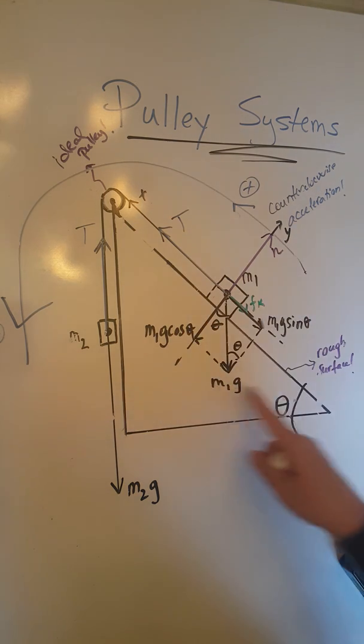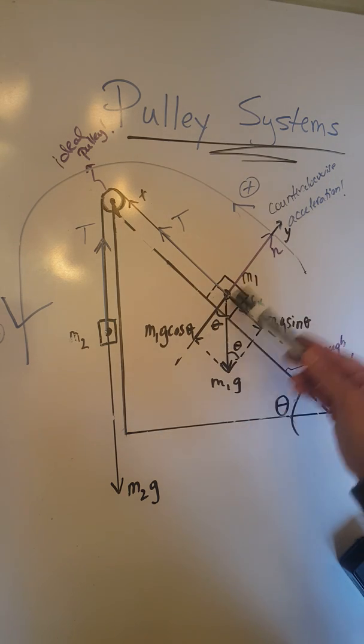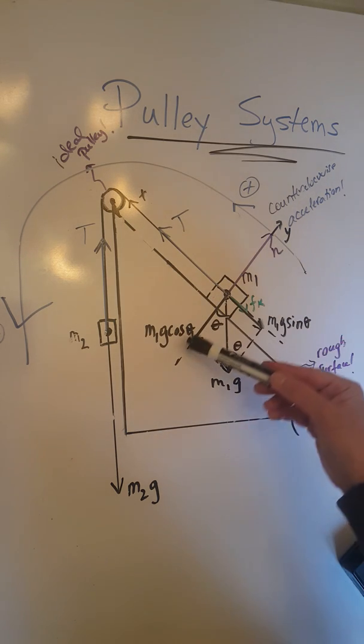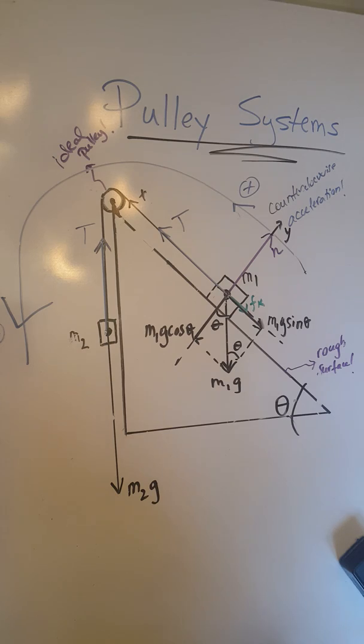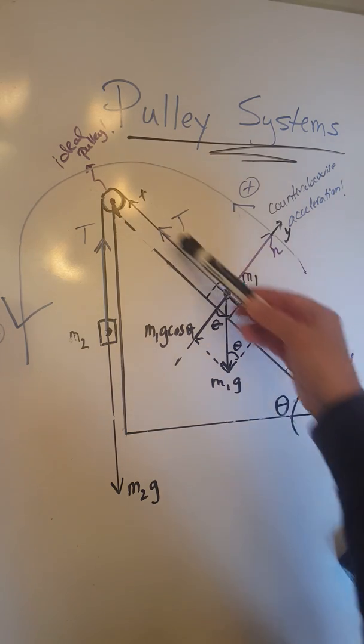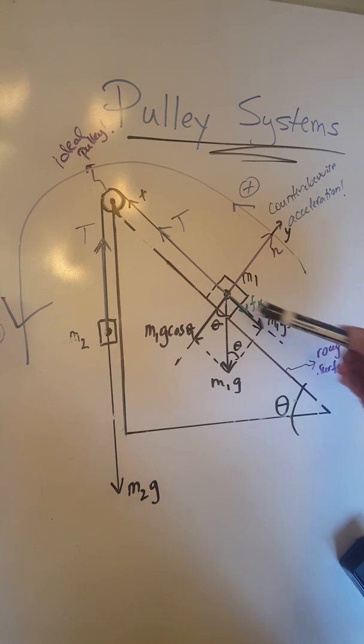Now for M1, that's a little bit different, because we have forces going in the y direction, N upwards and M1g cos theta downwards, and we have forces going in the x direction, T up the ramp, Fk and M1g sin theta down the ramp.